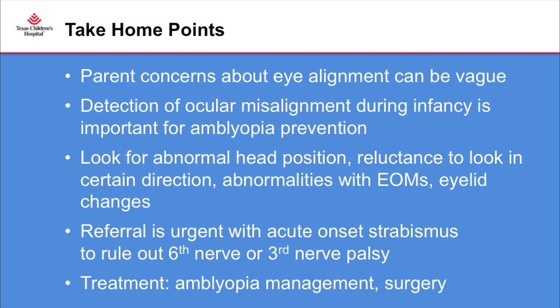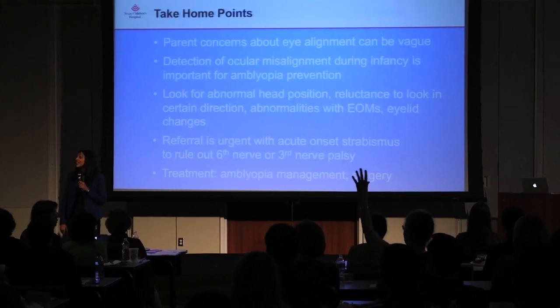In summary: parent concerns about eye alignment can be vague, especially in infancy. Detection of ocular misalignment during infancy is important for amblyopia prevention. Look for abnormal head position, reluctance to look in a certain direction, abnormalities with extraocular movements, and eyelid changes. Referral is urgent with acute onset strabismus to rule out a sixth nerve palsy or a third nerve palsy. The mainstay of treatment is amblyopia management and surgery.